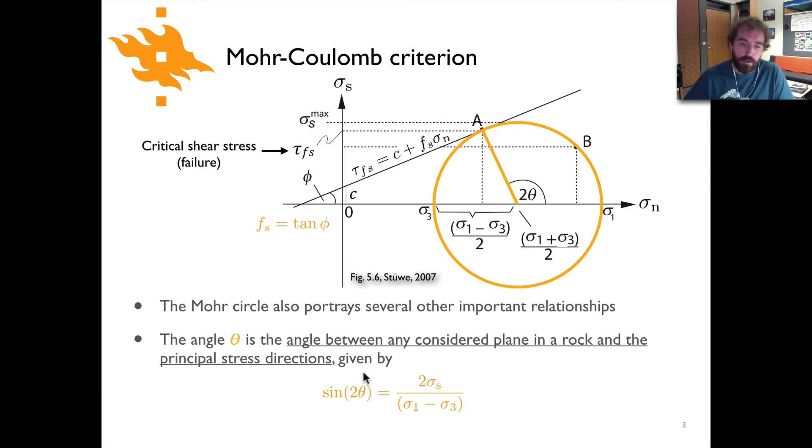The mathematical relationship here is that the sine of 2 theta equals 2 sigma s, the shear stress, divided by the difference in the principal stresses of the maximum minus the minimum principal stress. And you can actually think through what that looks like in terms of a triangle, and it's rather easy to demonstrate those relationships.